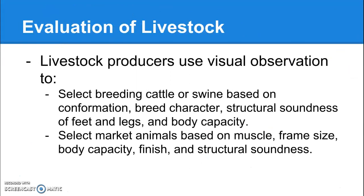We use visual observation to do a couple different things. We can select breeding animals — cattle or swine — based on conformation, which is just a fancy word for how their bodies are put together, their breed character, their structural soundness of their feet and legs, and also body capacity. We select market animals based on muscling, frame size, body capacity, finish, and structural soundness.